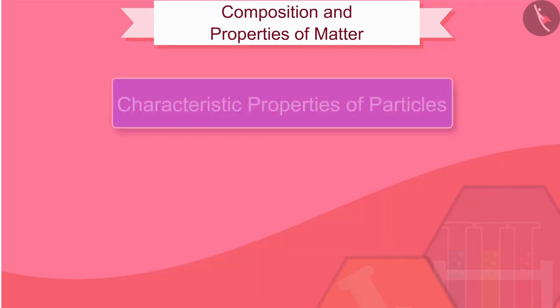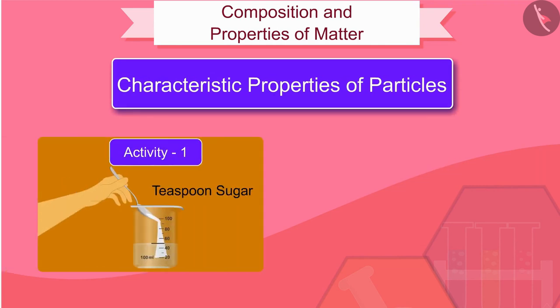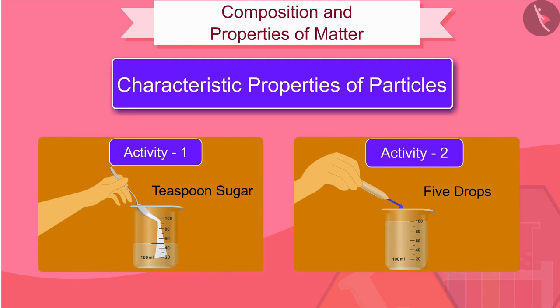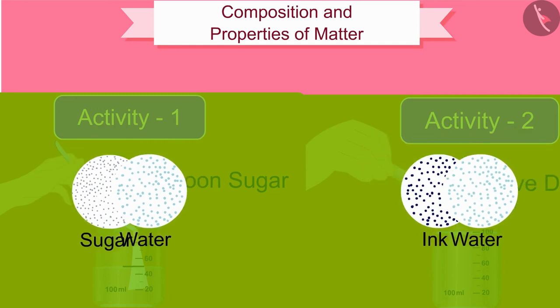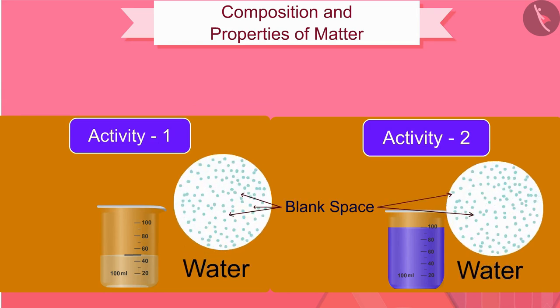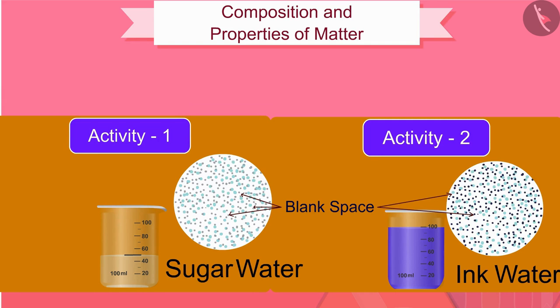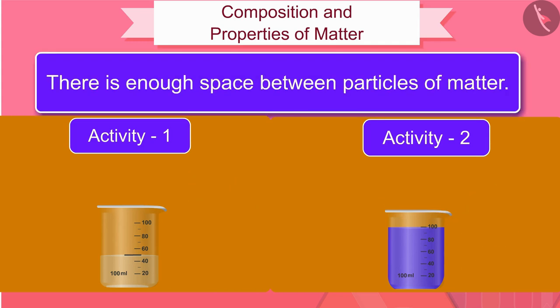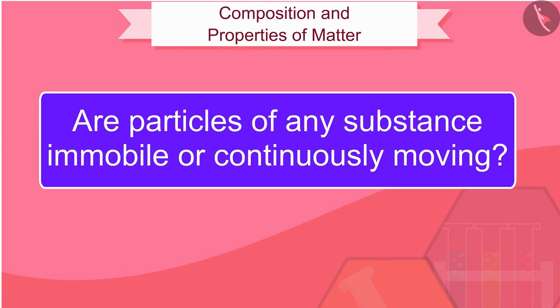By this activity we can say that the particles of matter are very small. Let us now learn about the characteristic properties of these particles of matter. In activities one and two we saw how the sugar and ink particles were evenly distributed in water. This is possible because particles of one matter are incorporated into the spaces of particles of another matter. It shows that there is enough space between particles of matter.